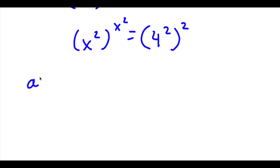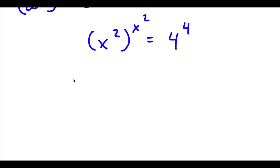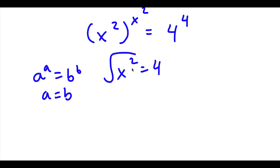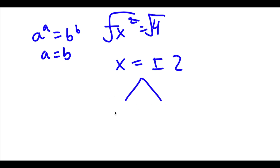Now using the rule a to the power of m to the power of n equals a to the power of m times n, I get 4 to the power of 2 times 2, which is 4 to the power of 4. Since a to the power of a equals b to the power of b means a equals b, we have x to the power of 2 equal to 4. Taking the square root on both sides, I'm left with x equals plus or minus 2. So my two solutions are x equals 2 and x equals negative 2.